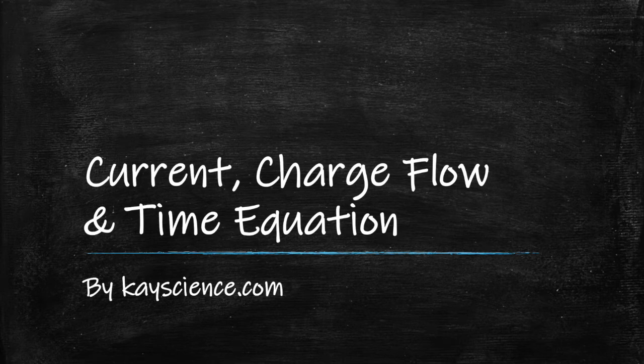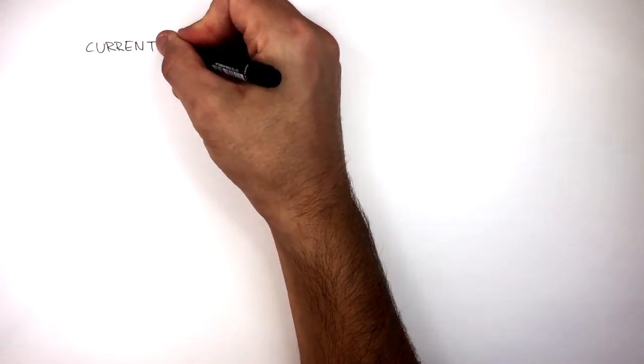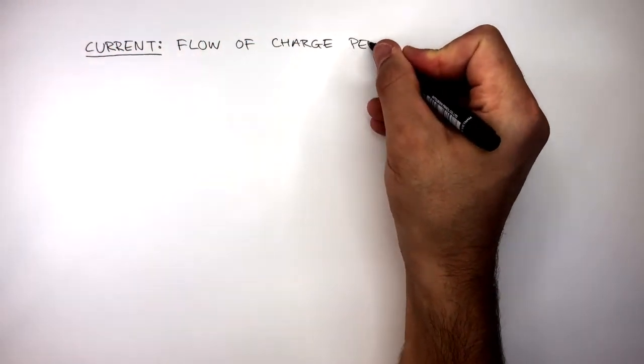Current, Charge Flow and Time Equation by kscience.com. Current is the flow of charge per second.